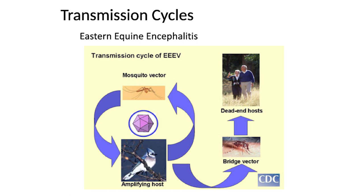Eastern equine encephalitis works much the same way — it's sequestered in a bird host population and amplified by a mosquito vector. In Massachusetts, one species loves to feed on birds and builds the virus in the songbird population, then a bridge vector that likes both birds and people will bite a bird and then bite a person or a horse — and again, we are dead-end hosts. That's why a lot of times you don't start to see press releases about human cases until later in the summer. It takes a while for the virus to build in the bird population before a mosquito bites an infected bird and passes it to a human.